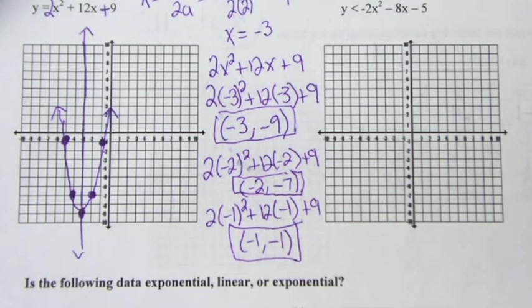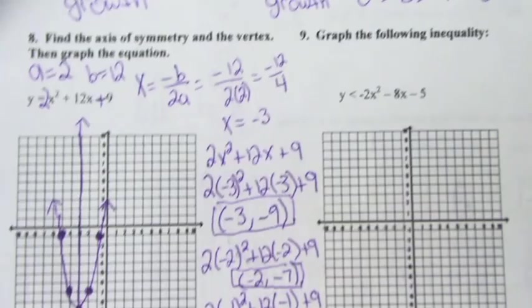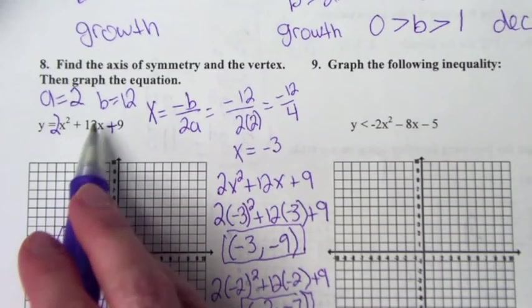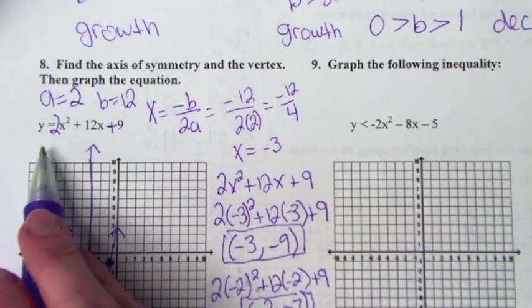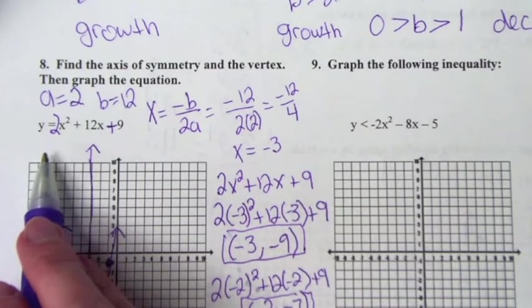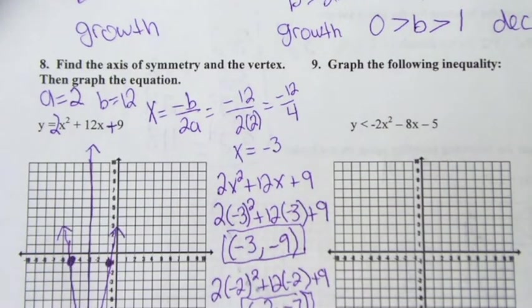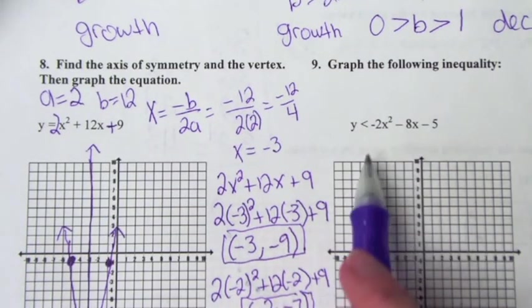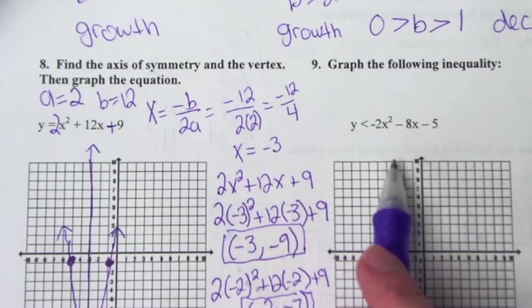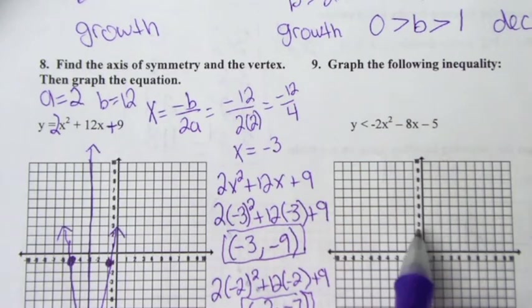How do we know if we have to shade or not? We look at the inequality symbol. Number 8 is just an equals, so there's no shading involved. If it's an inequality sign like number 9, then there's going to be shading either above or below.